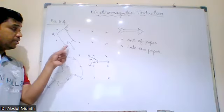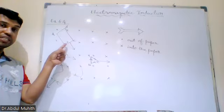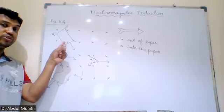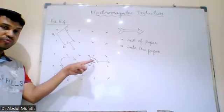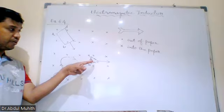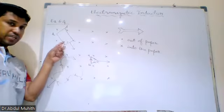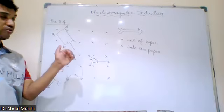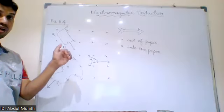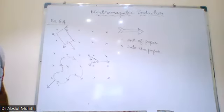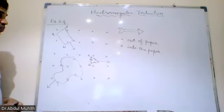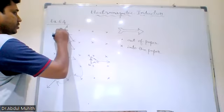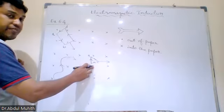Now what will happen? He's asking you to find out the direction of the current in the loop. What is happening when it is moving into the coil — it means that it is like a North pole. That means anticlockwise. So this is anticlockwise.